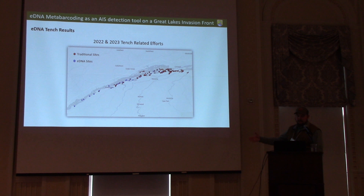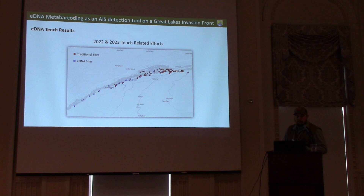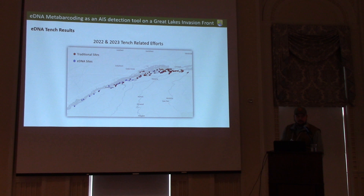Tackling the question of whether eDNA metabarcoding detects tench in a way that's reasonable to use at the invasion front: this map shows our sampling effort in 2022 and 2023, including both traditional effort and eDNA effort. This is a large stretch of river — 40 river miles. We're using eDNA, shown as blue dots, to expand our coverage even further upstream, while focusing our traditional efforts around the Valleyfield Dam area.